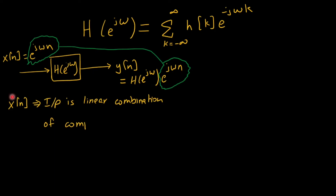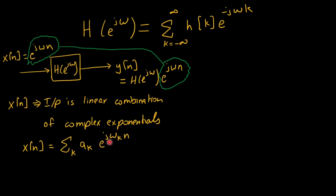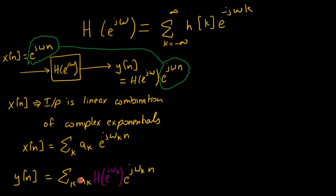If the input is a linear combination of complex exponentials — x of n synthesized as a weighted sum of complex exponentials each weighted by coefficient a k — then by the superposition theorem, the output is also a weighted sum. Each complex exponential is multiplied by its corresponding eigenvalue h of e j omega k. In summary, a linear combination of complex exponentials at the input leads to a linear combination of complex exponentials multiplied by the eigenvalue at the output.